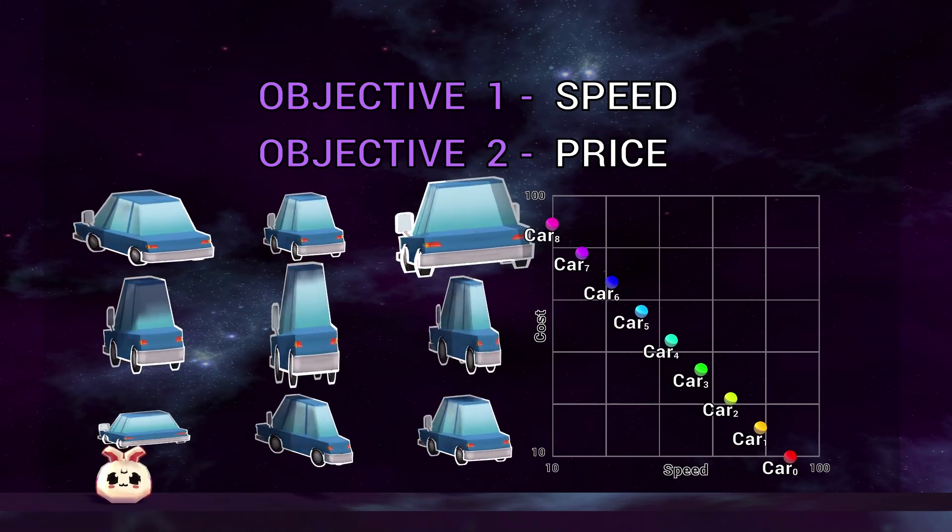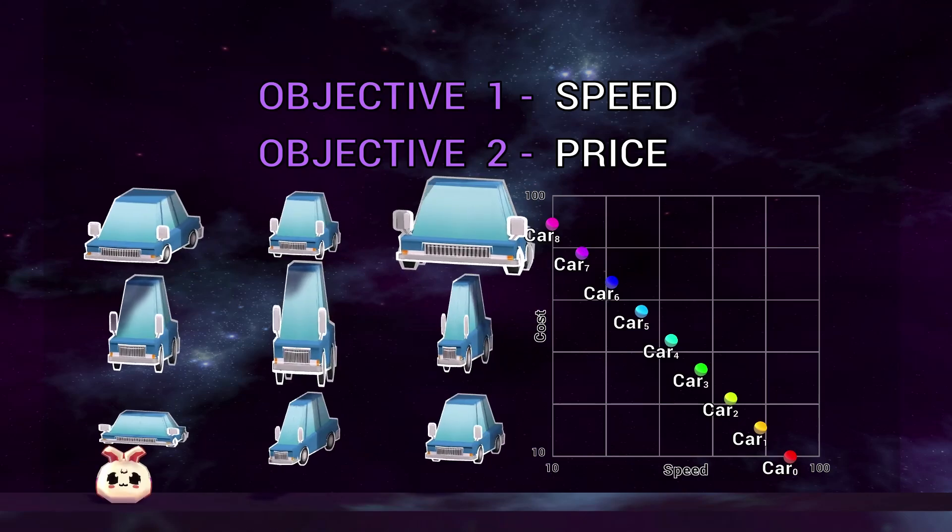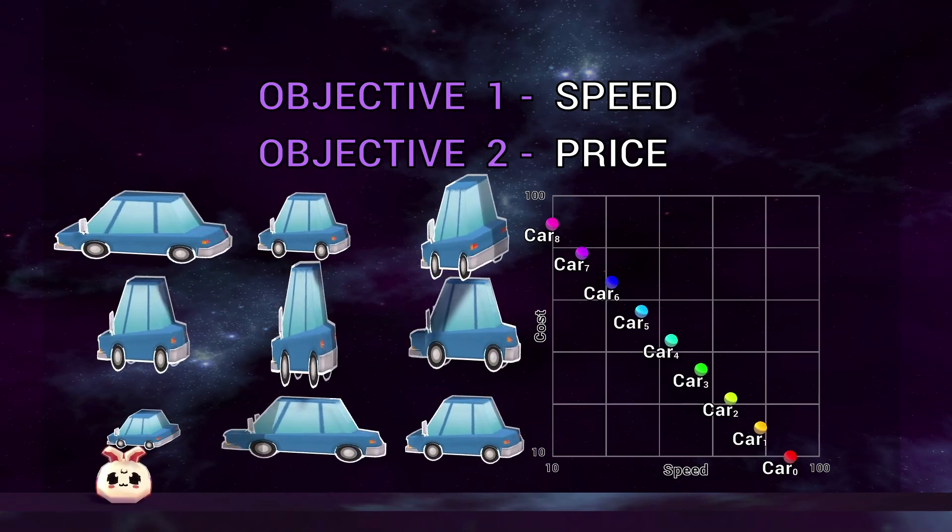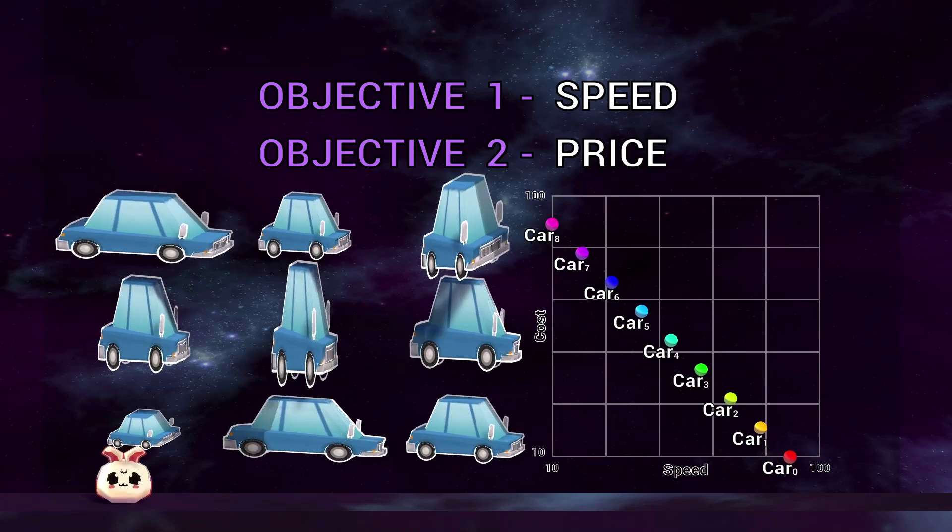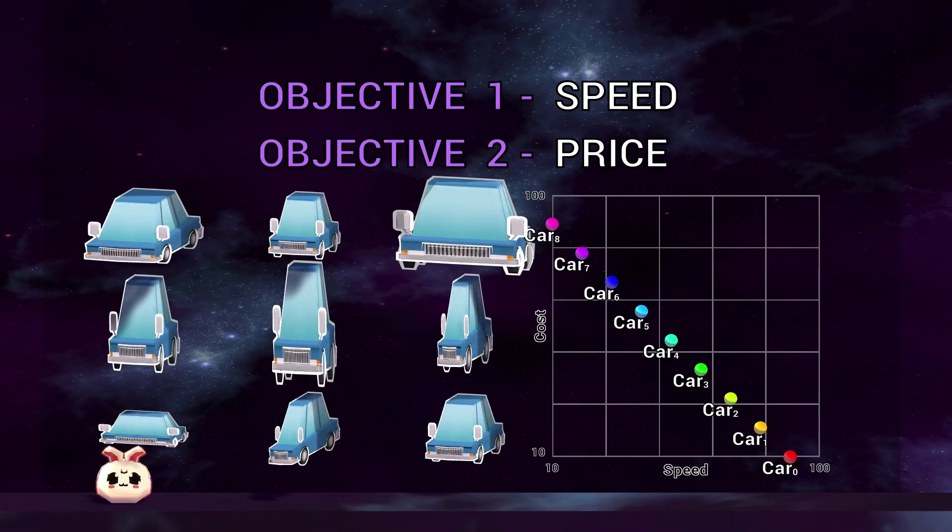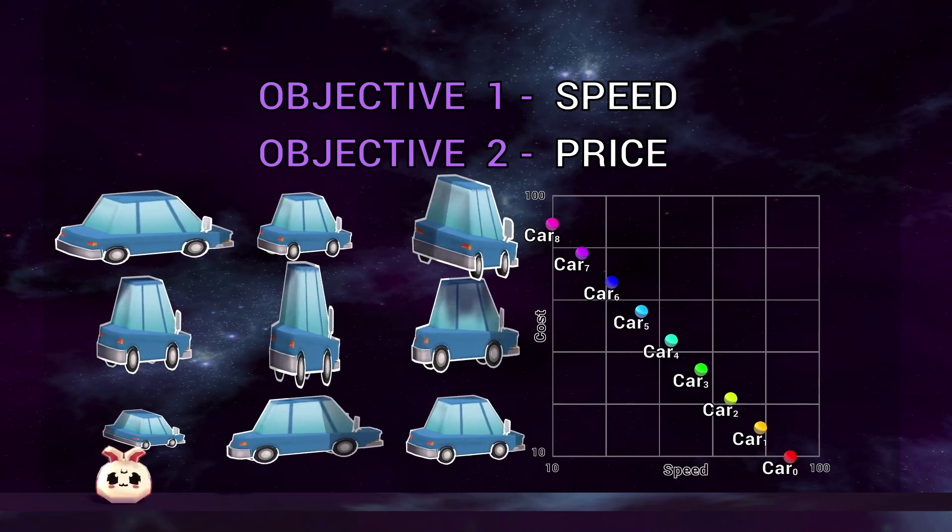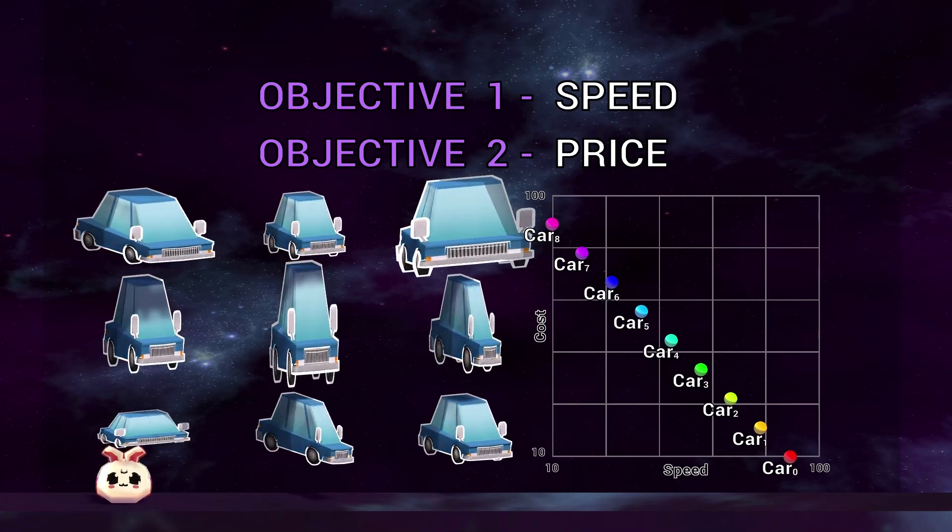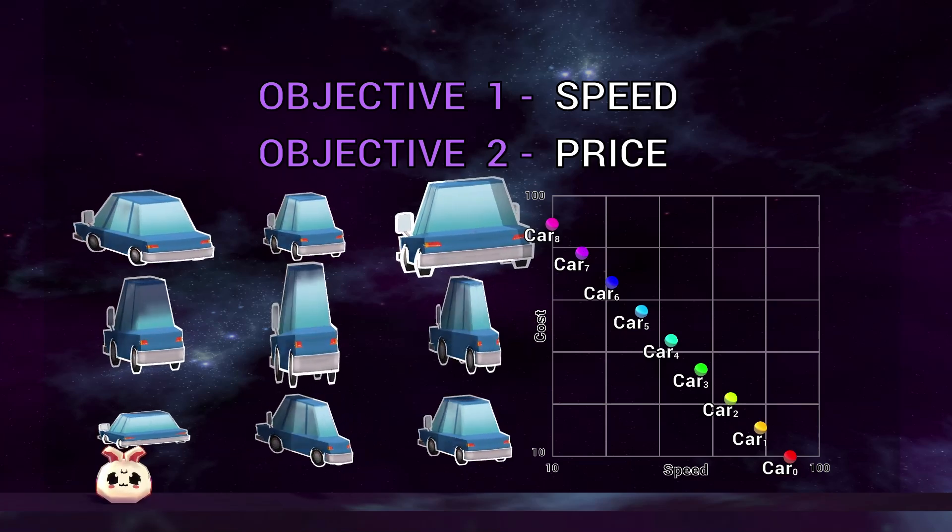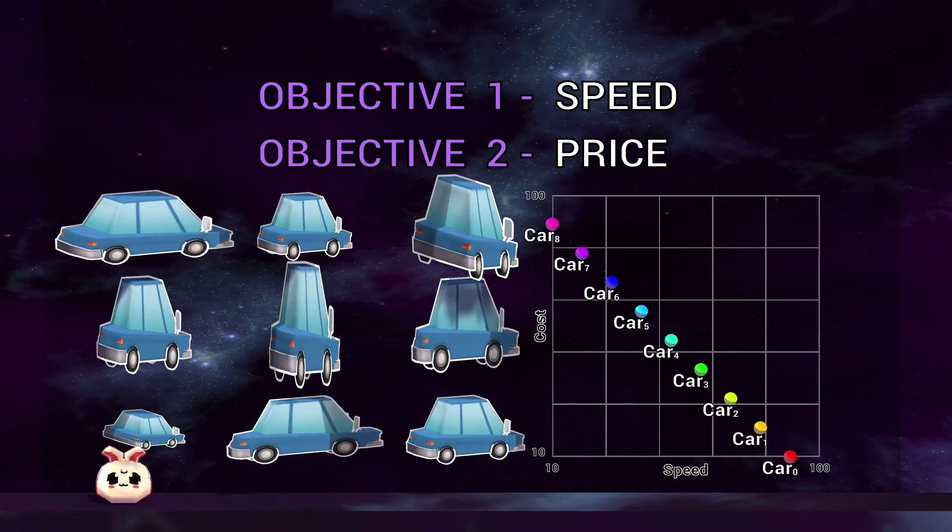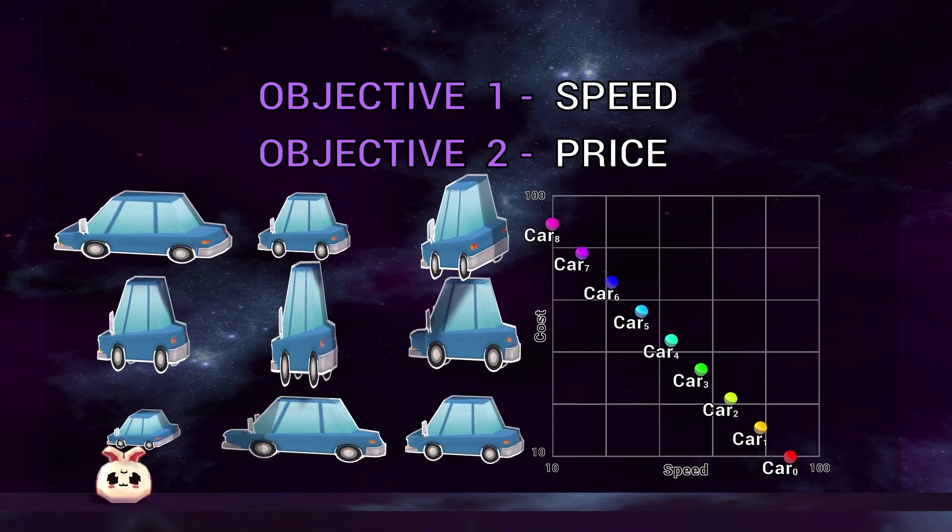Luckily, there are hundreds of optimization algorithms which can take our test function and automatically generate sets of car designs through some kind of iterative process. But if we decide to try two or even ten different optimization algorithms to decide which one gives us the best results, how do we pick which set of car designs is better? And how do we do this automatically during some kind of optimization process? This is where the hypervolume indicator comes in.